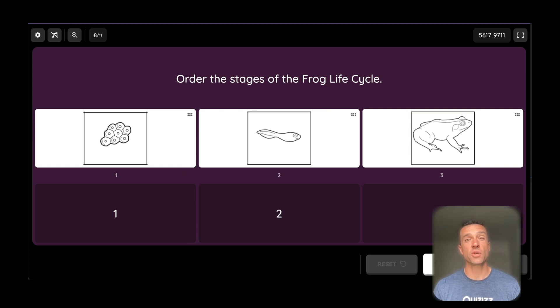Besides the label and the hotspot, there's also this reorder question, which you can see is another great way to use our visuals. So this person here was saying, hey, put the frog cycle in order.